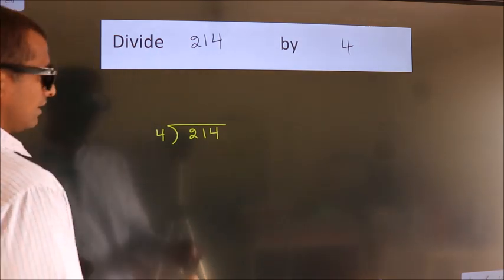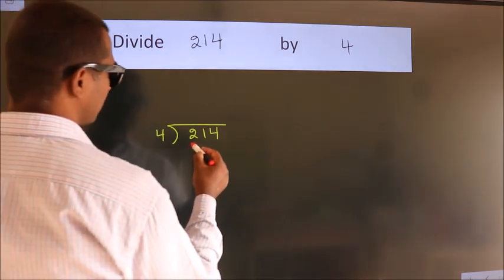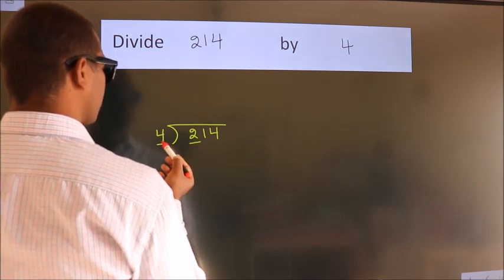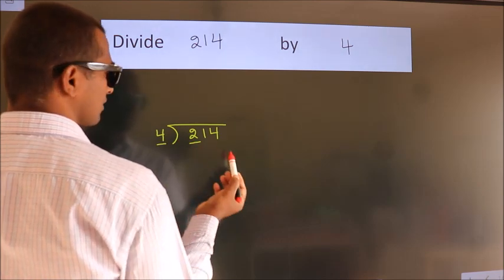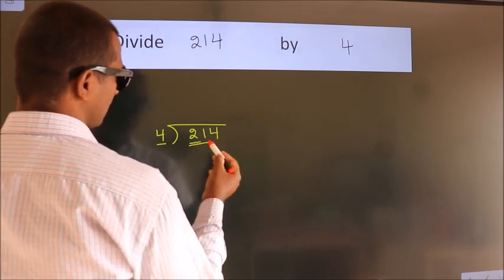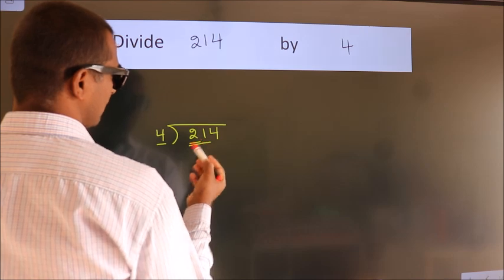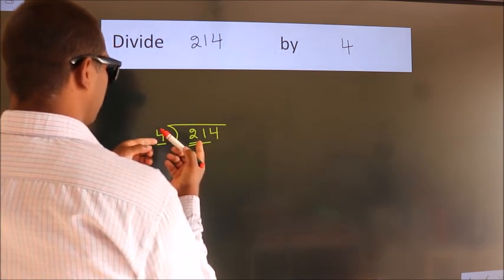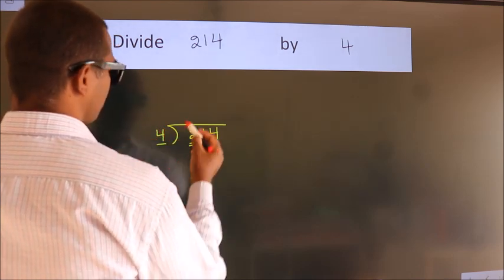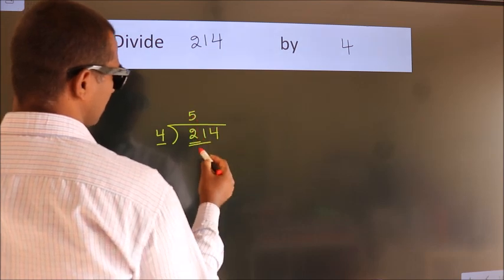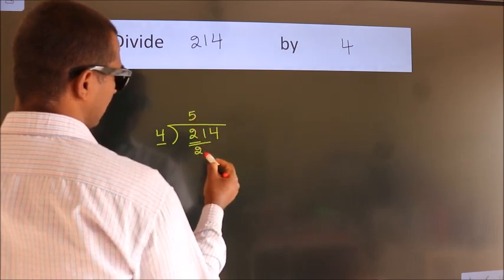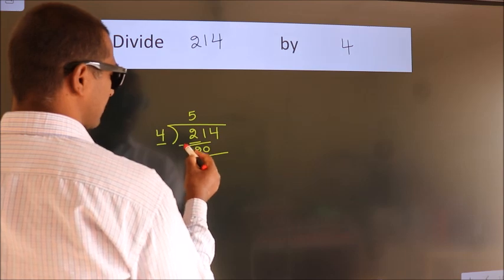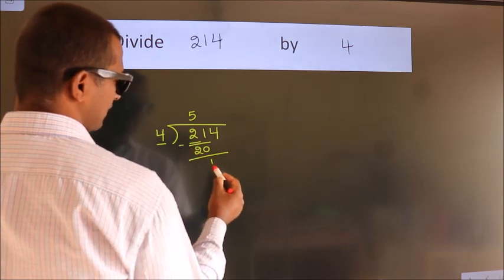Next, here we have 2, here 4. 2 is smaller than 4, so we should take 2 numbers: 21. A number close to 21 in the 4 times table is 4 fives, 20. Now we should subtract. We get 1.